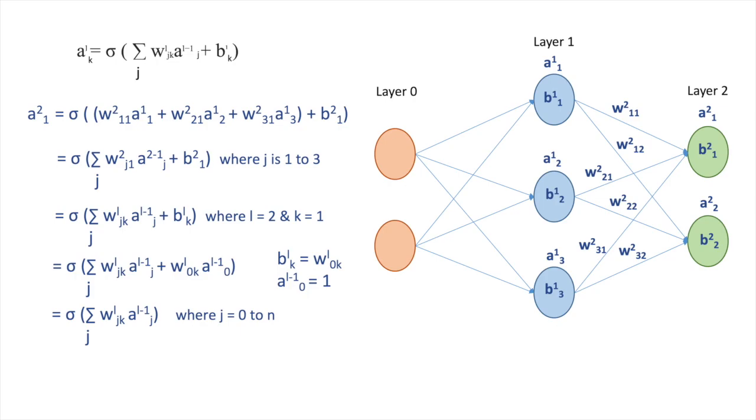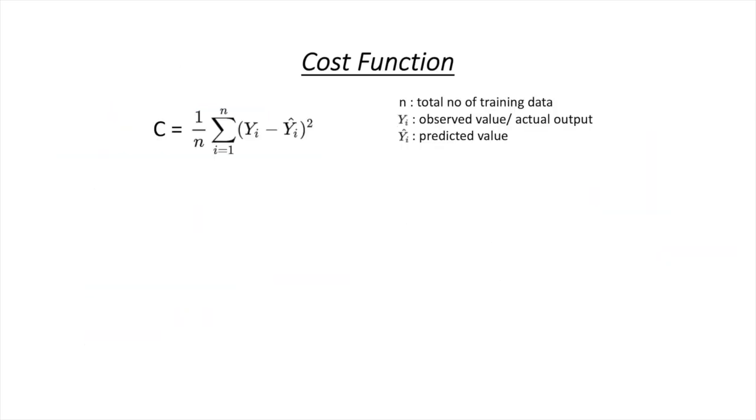Our objective is to find out values for w and b so that network can calculate output value which will be closer to actual output, and more closer means better model. To measure this, we need cost function or loss function. Most widely used cost function is squared mean error function which can be defined as C equals 1/n times summation of (y_i minus y_i bar) squared. Here n denotes training data size, y_i for actual output and y_i bar for predicted value.